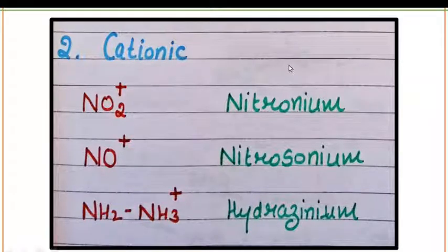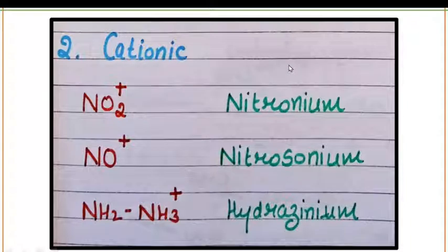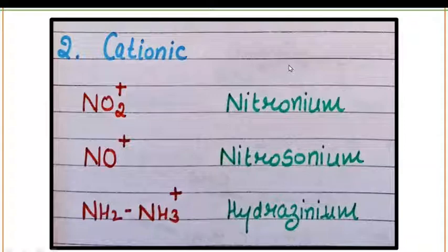In cationic monodentate ligands there are three examples: number one is NO2+, that is nitronium; number two is NO+, that is nitrosonium; and number three is NH2-NH3+, that is hydrogenium. All three examples are very important — you need to memorize all cationic ligands.